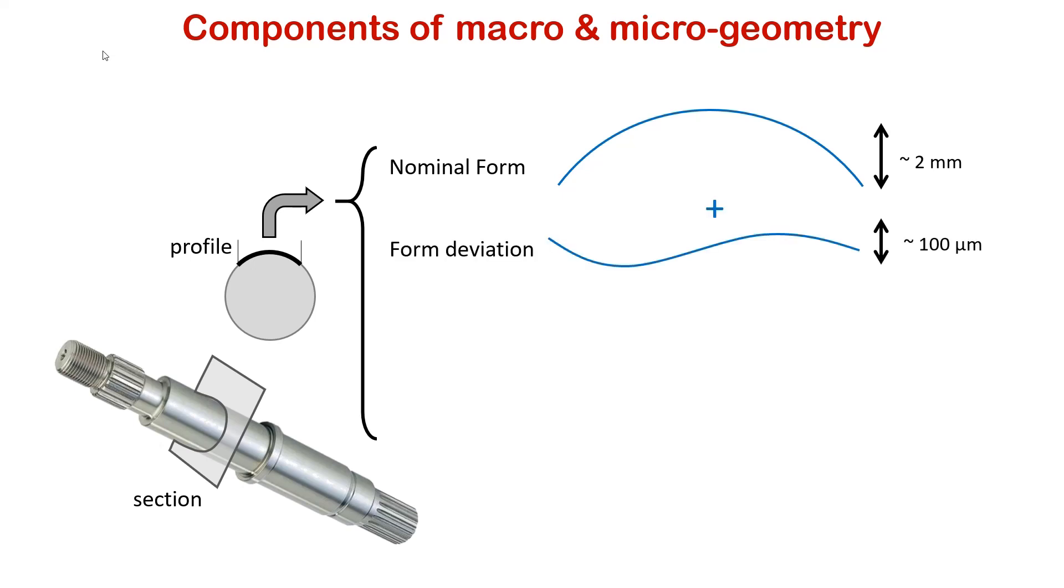The form deviation is due to inaccuracies in the production of the theoretical form during machining. A workpiece that is supposed to be cylindrical is in fact slightly oval because of, for example, the biasing of the tool axis.